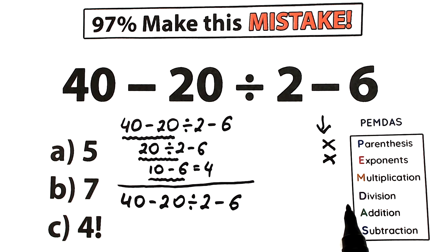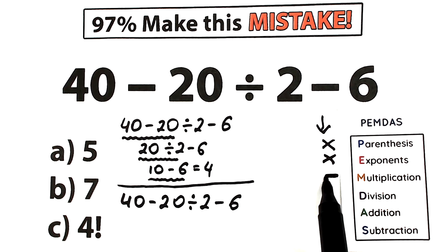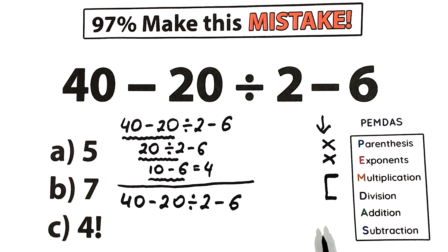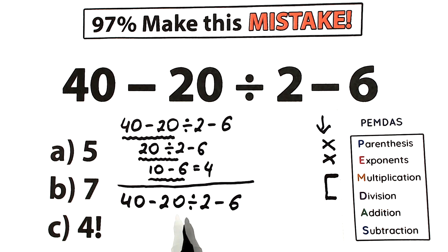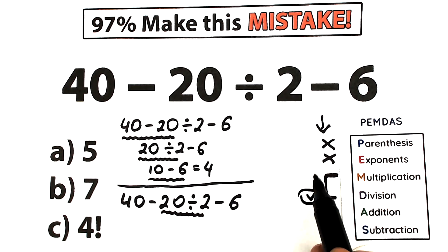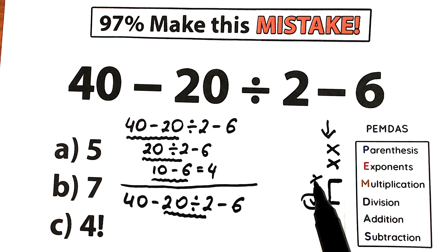Next step: multiplication and division. This is one common group — multiplication and division have the same priority. Let's find multiplication and division signs. Right here we have subtraction — we're not interested in that. Right here we have division, so we should start from this division. We don't have any multiplication sign.